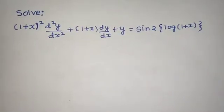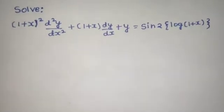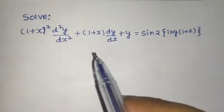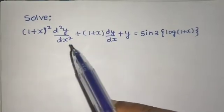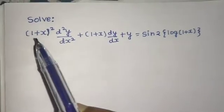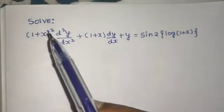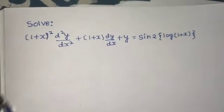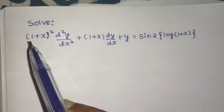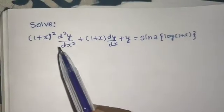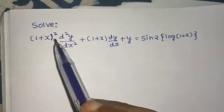Let's see one problem from linear differential equations. Here we can see that with the second derivative we have a variable thing, not a constant. And the power of 1+x is the same as the order of the derivative - here power is 2 for the second order derivative.